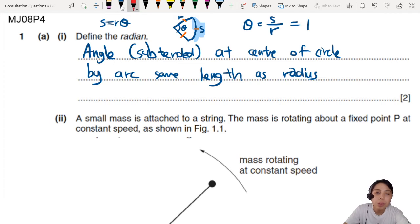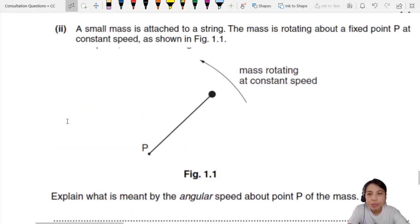Two marks here. One is from you talking about the angle at the center of a circle. Subtended is an optional word sometimes. By an arc length, same length as radius. So the idea of that will be another B1 mark. Independent marks.